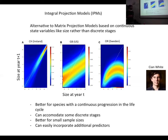We think integral projection models are appropriate for this species because they are especially suited to species with a continuous progression in the life cycle, although IPMs can also accommodate discrete stages. We can probably describe the life cycle better by accounting for continuous size rather than dividing into discrete stages. IPMs are also good for small sample sizes and we can easily incorporate additional predictors beyond size.